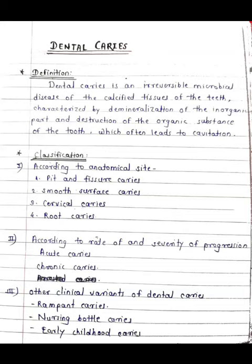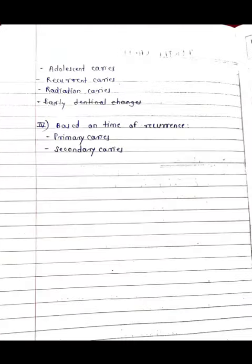Based on rate and severity of progression, dental caries is classified into acute caries and chronic caries. Other variants include rampant caries, nursing bottle caries, early childhood caries, adolescent caries, recurrent caries, and radiation caries. A fourth classification is based on time of recurrence: primary caries and secondary caries.